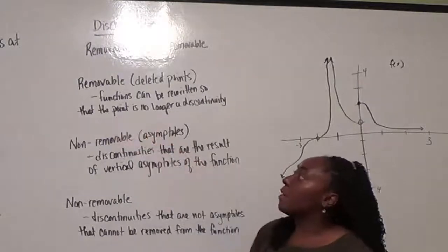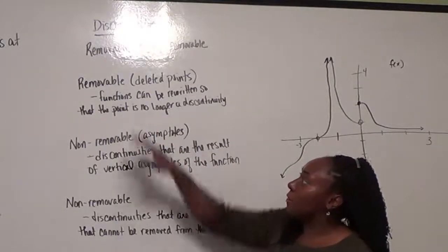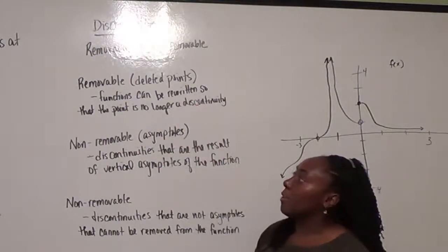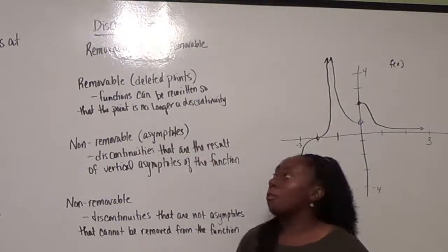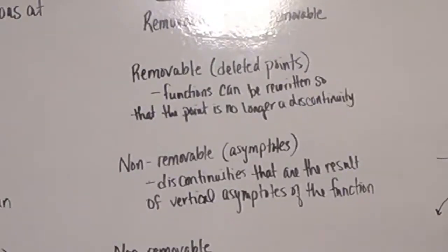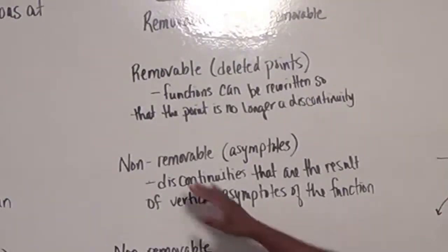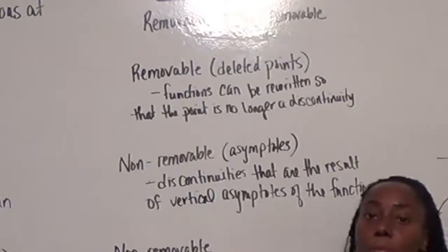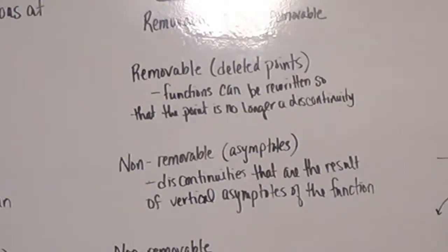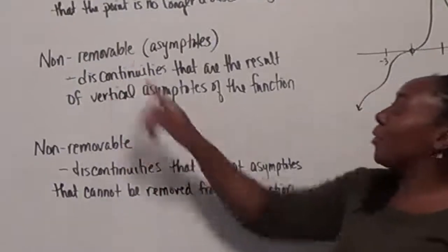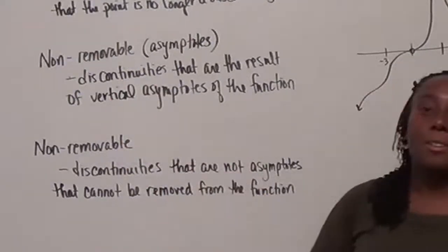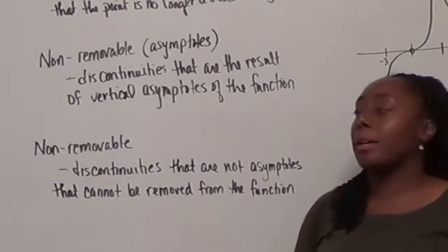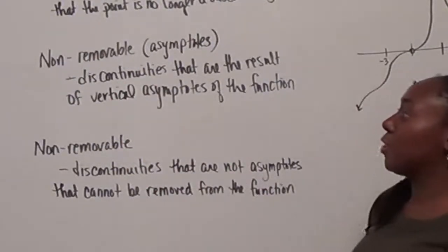In terms of the function, it's a function that can be rewritten so that the point is no longer a point of discontinuity. For non-removable, we actually have two types of non-removable discontinuities. The first is what we consider our asymptotes — our vertical asymptotes for a function.